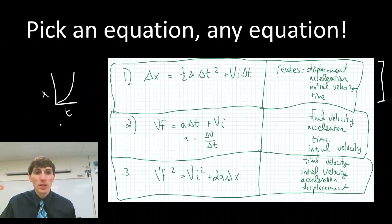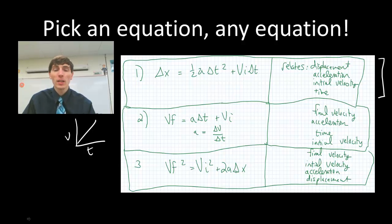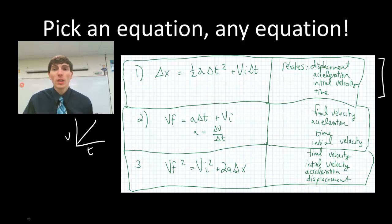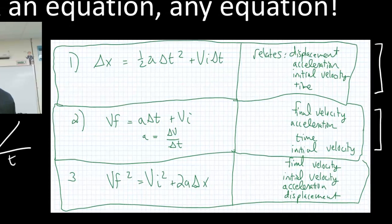The second equation came from the velocity-time graph. From the Hill Lab, we were able to figure out what the velocity versus time graph looked like. That equation rearranged gives us acceleration equals delta V over delta T. This equation essentially relates final velocity, acceleration, time, and initial velocity. So if I have three of these four, this is the equation I will use.